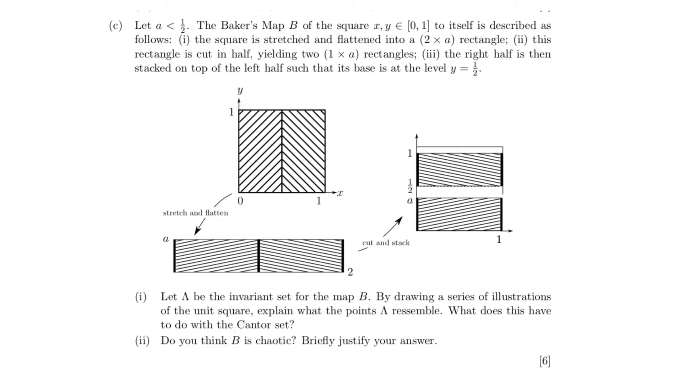Let's start with a concrete problem and discuss the questions that appear on the 2018-19 exam regarding the baker's map. First, the question. Let a be less than a half. The baker's map, B, of the square (x, y) in [0,1] × [0,1] to itself is described as follows. First, the square is stretched and flattened into a 2 by a rectangle. Second, the rectangle is cut in half, yielding two 1 by a rectangles.